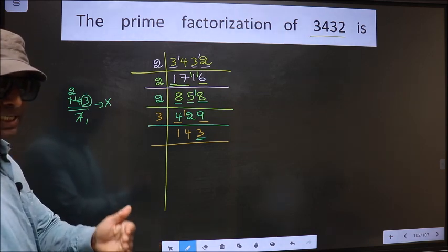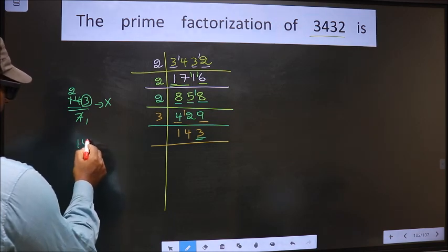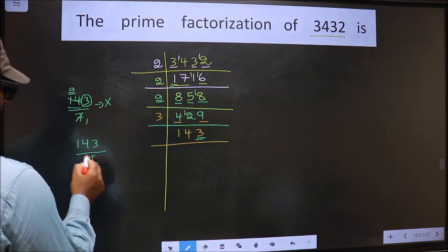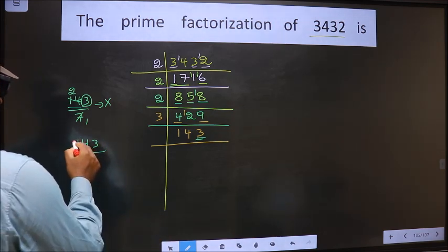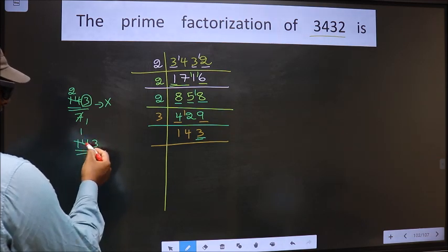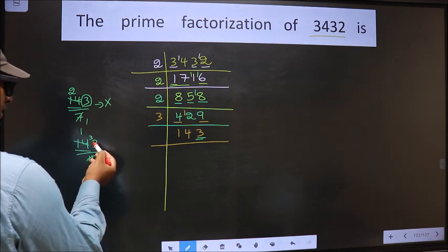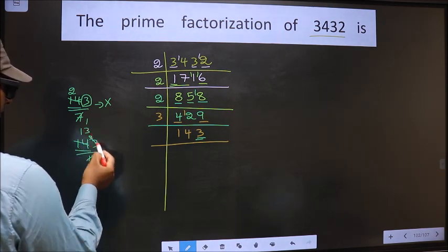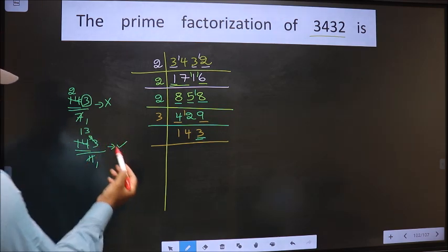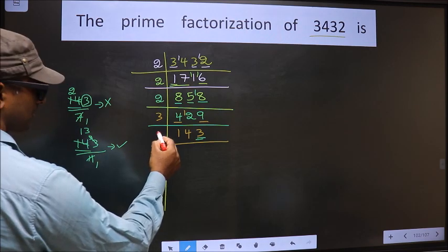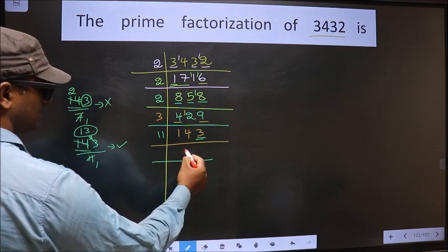Next prime number 11. Checking divisibility by 11: 11 ones — here we have 14. A number close to 14 in the 11 table is 11 ones, 11. 14 minus 11 is 3, carried forward making it 33. When do we get 33 in the 11 table? 11 threes is 33. No number is left, so this number is divisible by 11. So 11 here, and we write the result — that is 13.